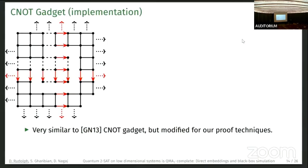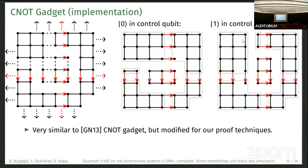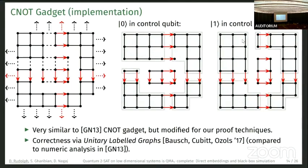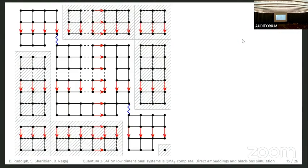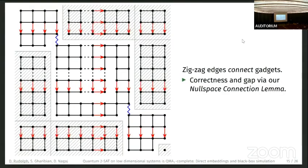Our construction is very similar to Gosset-Nagaj 2013 but tightly modified for our locality constraints. On ket-zero, one transition is made solid; on ket-one, the other is made solid. You get a path where first x then y applies for ket-zero, and first y then x for ket-one. The center is penalized because of the contradiction: x·y should equal y·x, but these do not commute, so the center is penalized. Correctness follows from so-called unitary labeled graphs, which is more rigorous than the numeric analysis used in 2013. Gadgets are placed on the diagonal, connected by zigzag edges, and correctness and the gap are proved via a nice-space connection lemma.